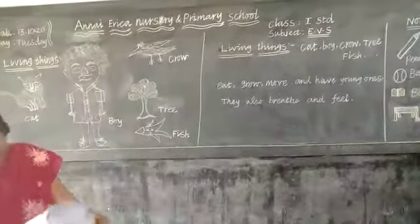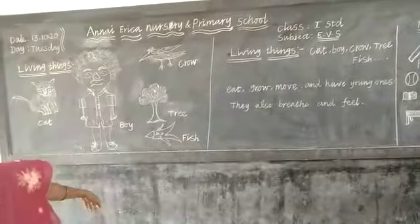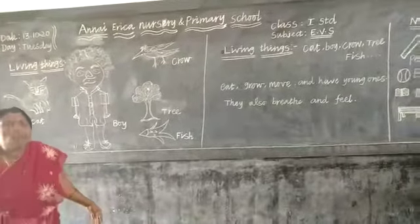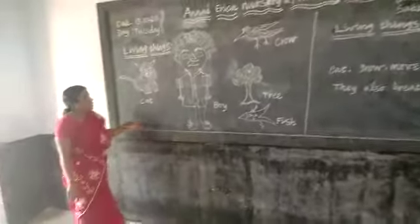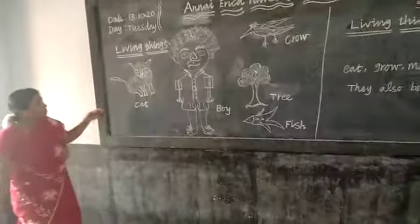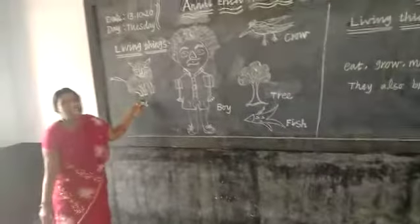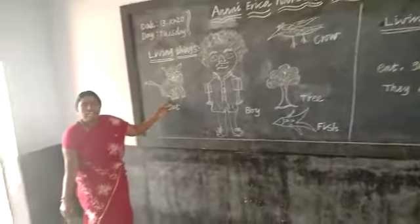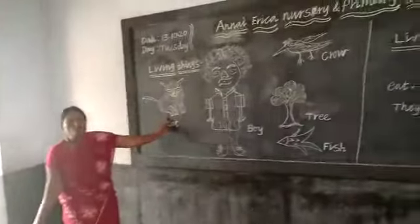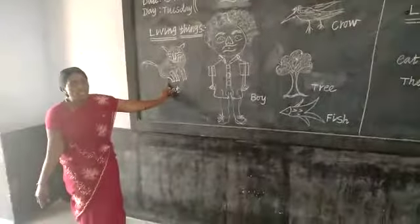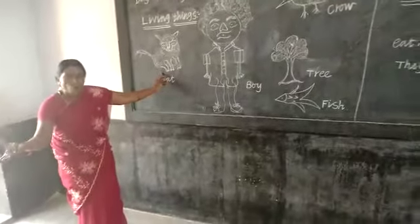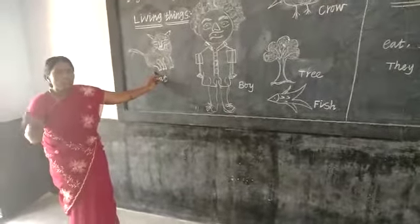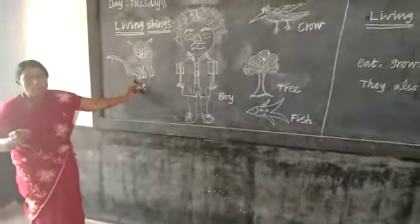Living things. We are going to follow them — five different. Cat, water, leaf — these are examples of living things.